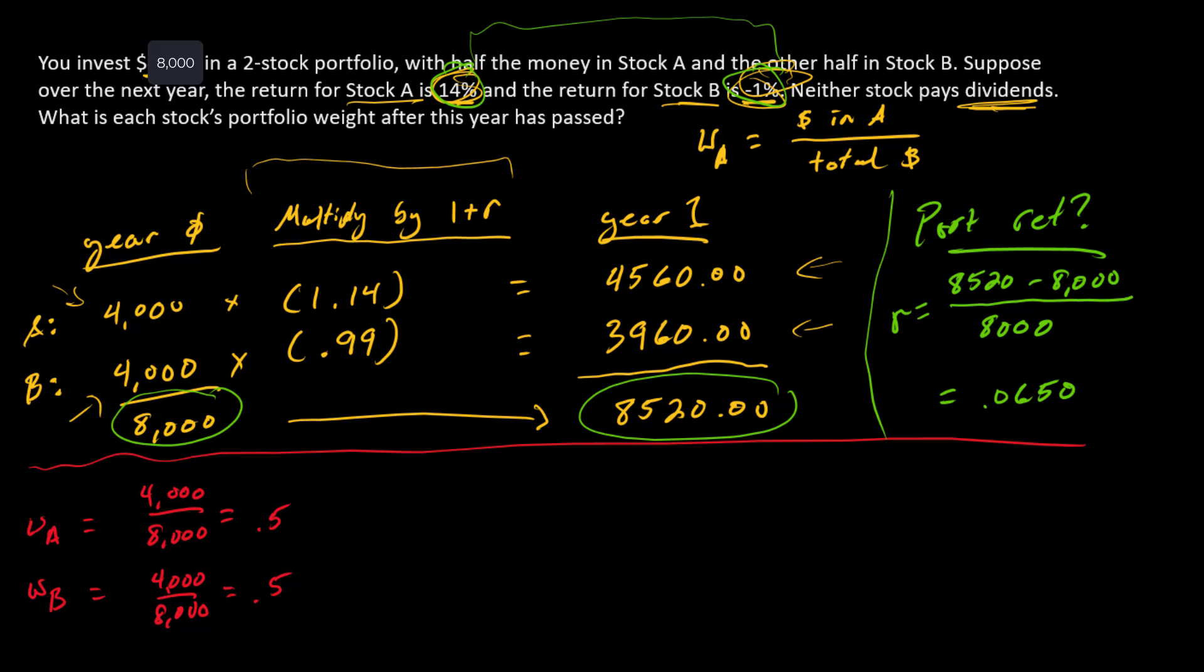Back to the main problem, though—we're trying to calculate what the new weights were. To calculate our new weights, we're just going to use the same types of numbers, except we're going to use the updated values.